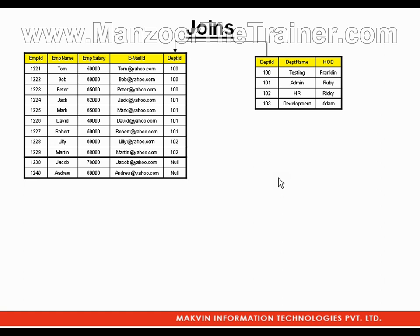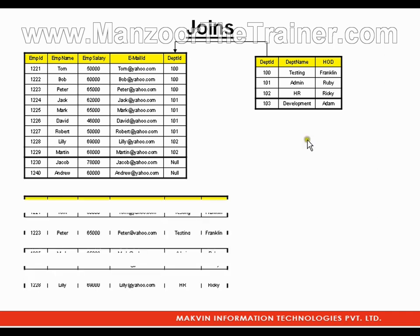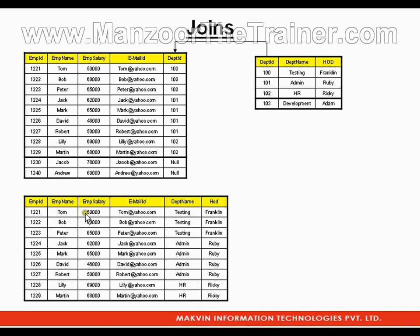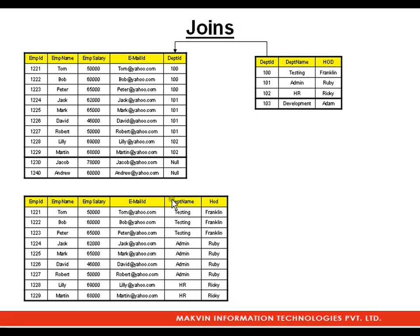I want to extract employee ID, employee name, employee salary, email ID, department name, and HOD name — data from more than one table. If you observe the output, these columns come from what I call the left table (employee table) and the right table (department table). From the left table I have records 121 to 129, and from the right table I have Testing, Admin, and HR.